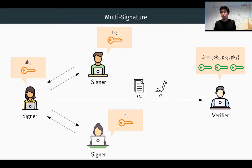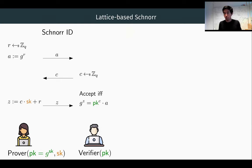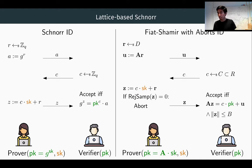Our goal is to construct a lattice-based MOTS signature using some interactions. Our starting point is Schnorr's identification scheme. Recall that in the discrete log setting, the Schnorr prover first commits to the randomness, and then upon receiving some challenge, the prover outputs a response value. It is known that you can instantiate a lattice-based identification protocol, which originated in Lyubashevsky's work.